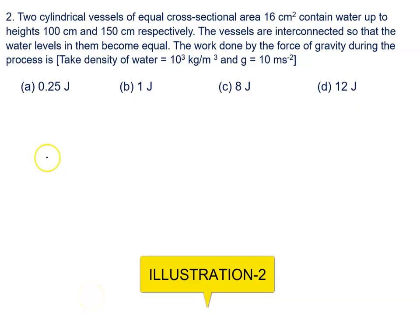Two cylindrical vessels of equal area of cross-section, that is 16 cm², contains water up to the height 100 cm and 150 cm respectively.